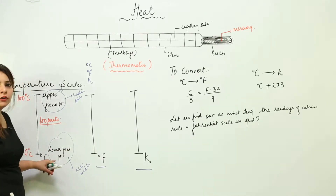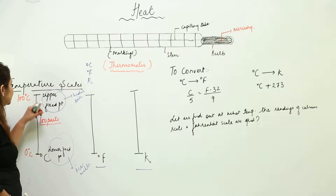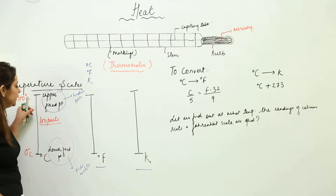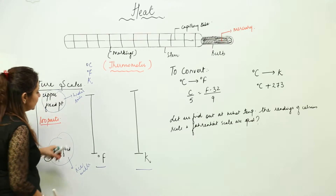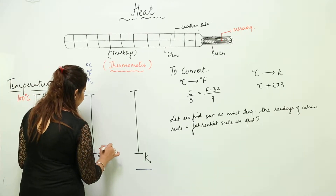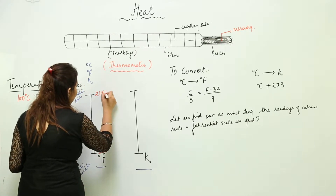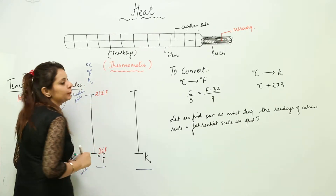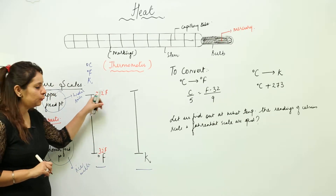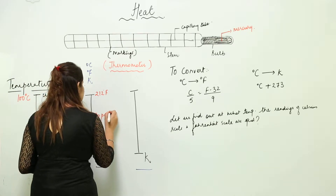For degree Fahrenheit, the lower fixed point is 32 degree Fahrenheit — at which ice melts — and the upper fixed point is 212 degree Fahrenheit — at which water boils. The Fahrenheit scale is divided equally into 180 parts.